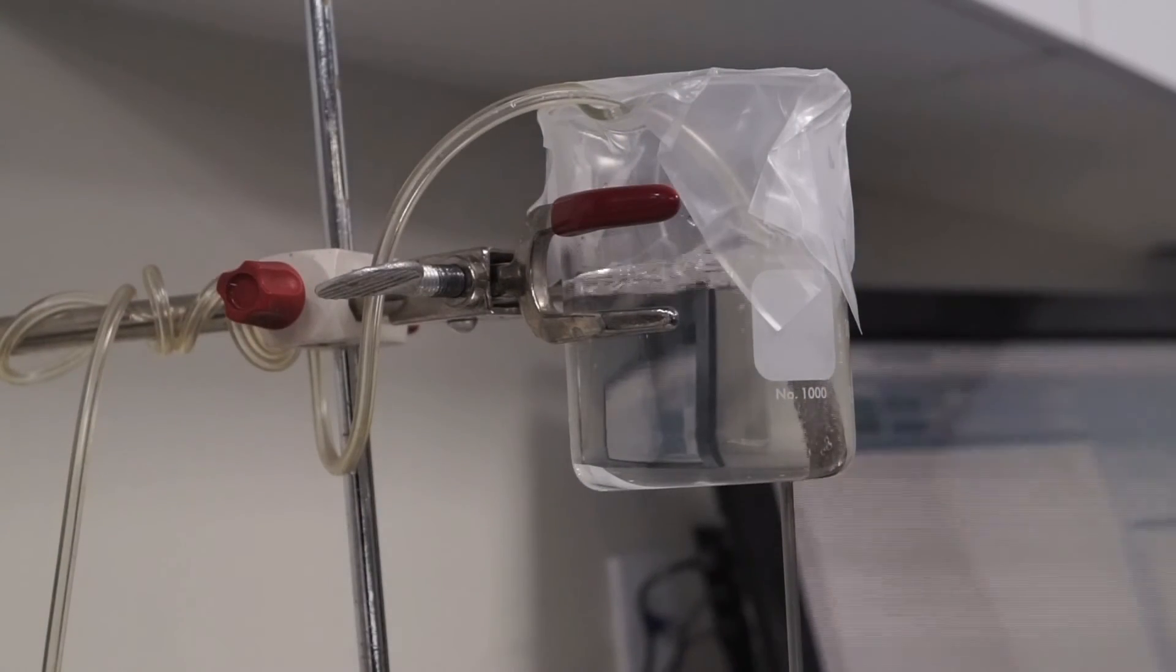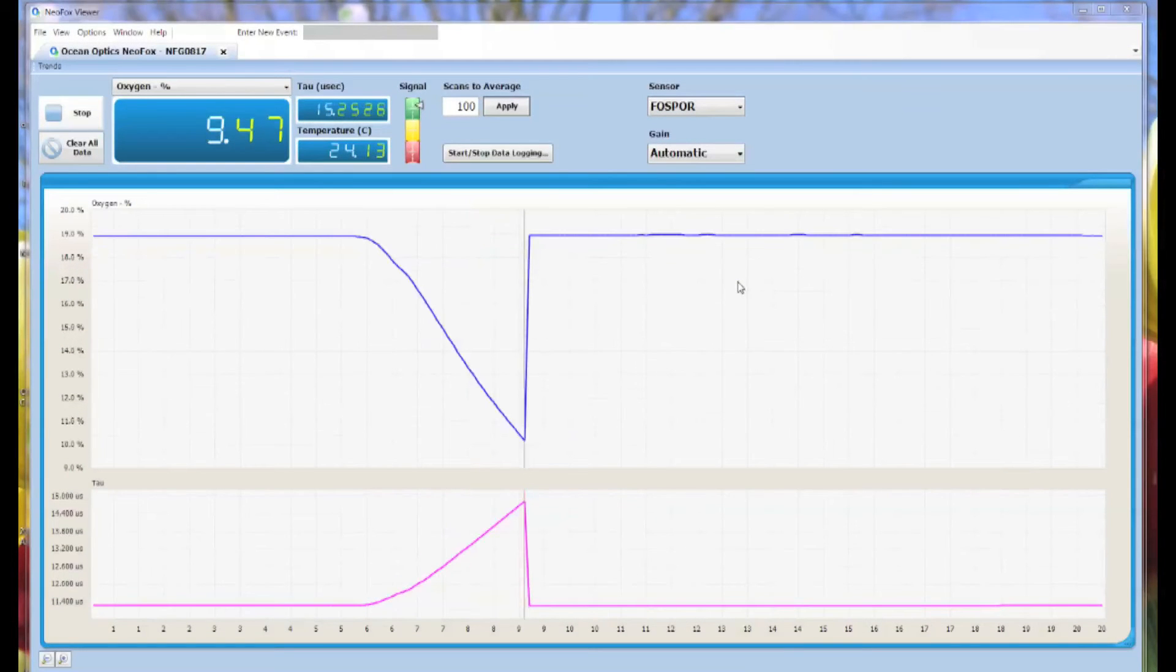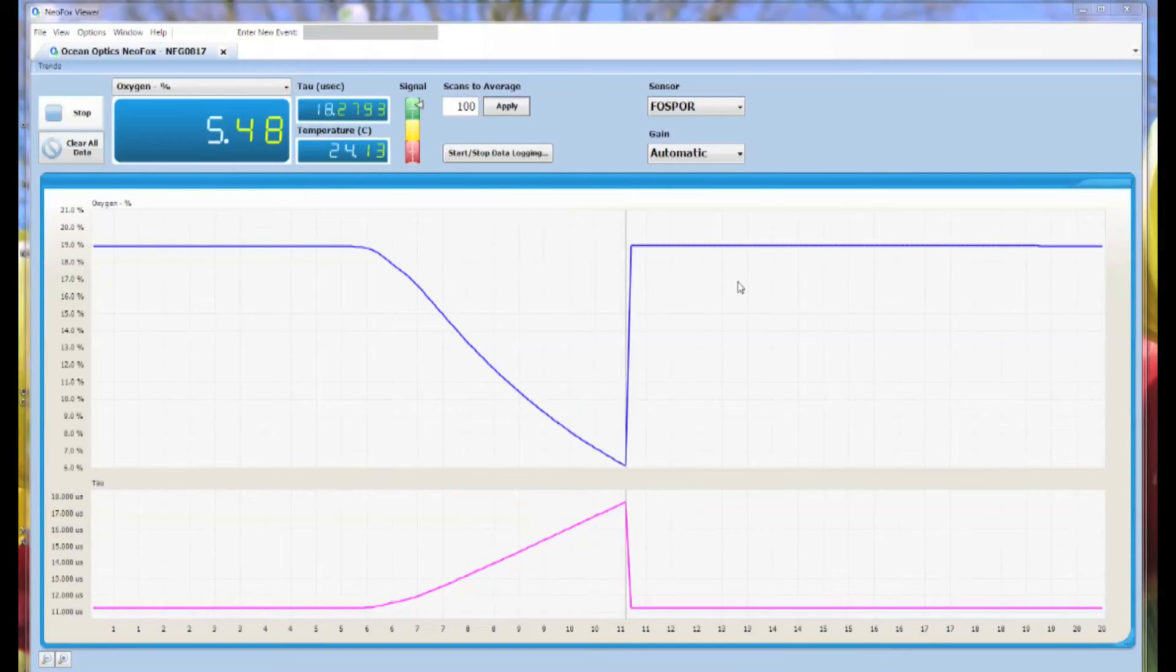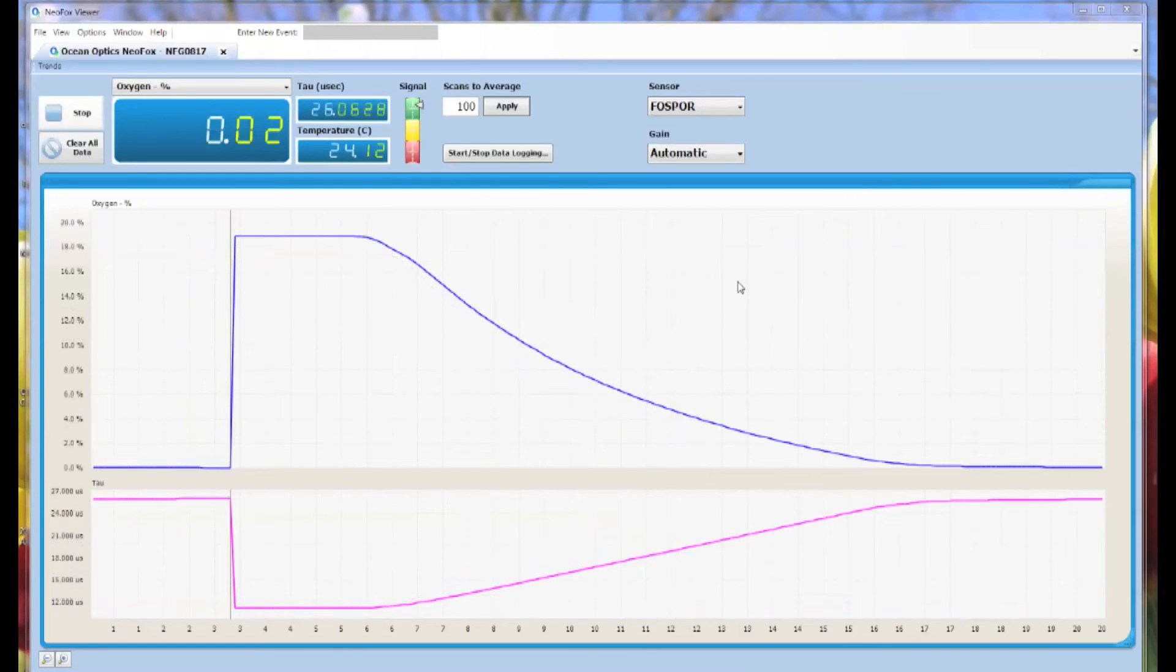Once you've begun purging all the oxygen from your liquid sample, you're going to have to wait for the signal on the NeoFox viewer to stabilize. Depending on the flow rate of your nitrogen and the type of chemistry you've chosen, this can take anywhere from one to five minutes.